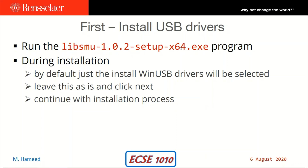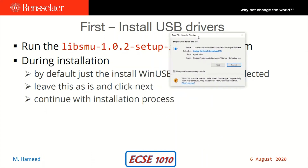Specifically I'm going to install the 64-bit version of the LibSMU library, and during the installation I need to keep track of which boxes are ticked and which ones are left alone. I'm going to start off the installation process by clicking on my downloads folder and navigating to where I just downloaded those three packages. I'm going to double-click on the x64 setup file for LibSMU library.